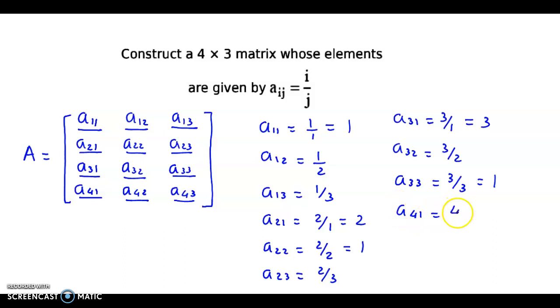A₄₁ is 4 by 1, that is 4. A₄₂ is 4 by 2, that is equal to 2, and A₄₃ is equal to 4 by 3.